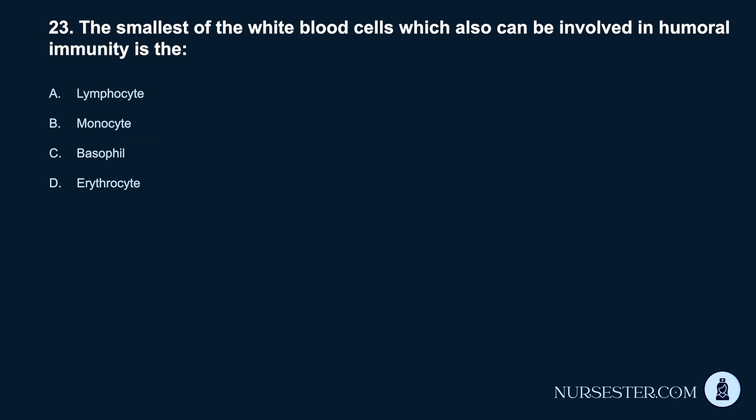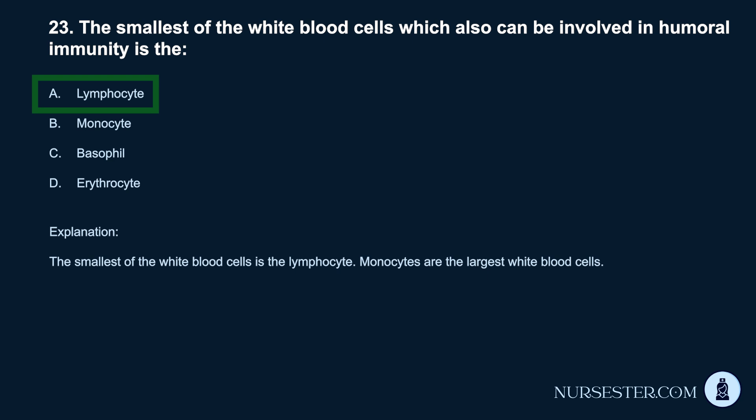Question 23. The smallest of the white blood cells, which also can be involved in humoral immunity, is the: A. Lymphocyte. B. Monocyte. C. Basophil. D. Erythrocyte. Correct answer: A. Lymphocyte. The smallest of the white blood cells is the lymphocyte. Monocytes are the largest white blood cells.